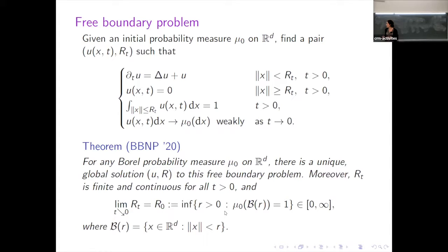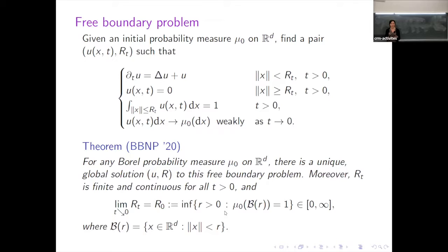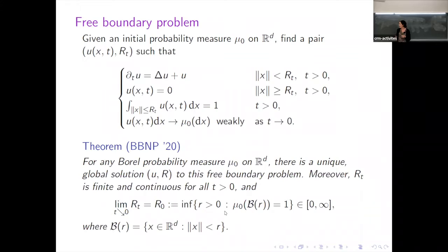There exists a unique global solution, and we can also show that R(t) is finite and continuous at all positive times t. We can also show that the limit of R(t) as t goes to zero exists — call it R_0 — and it equals the infimum of R such that μ_0 puts mass one on the ball of radius R. For example, if μ_0 is a point mass at the origin, R_0 could be zero; if μ_0 has unbounded support, R_0 could be infinite.